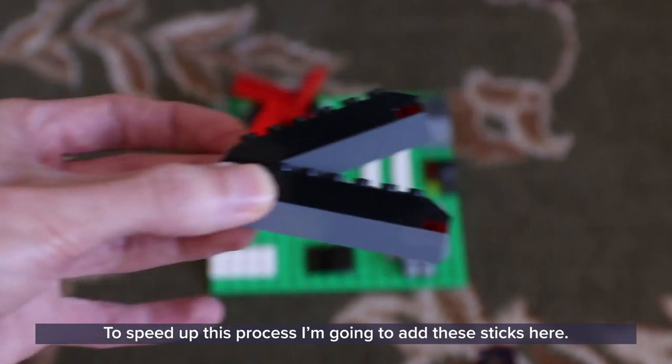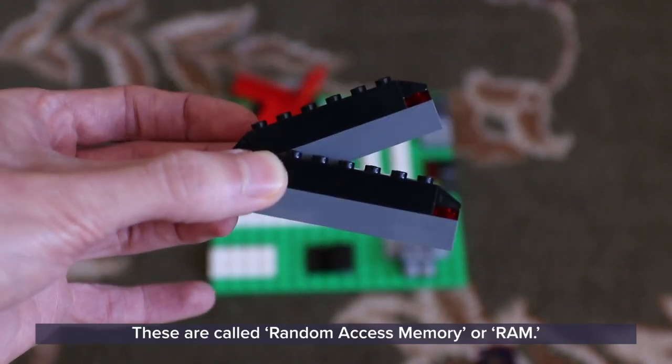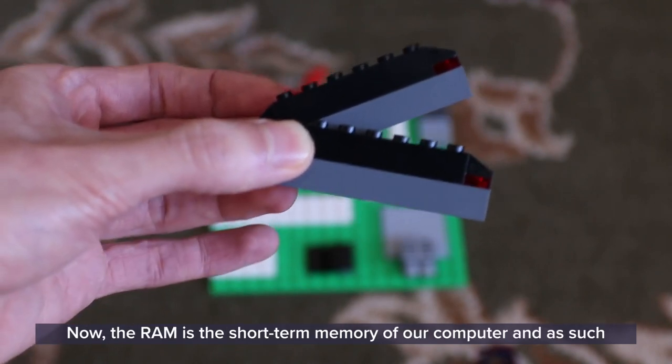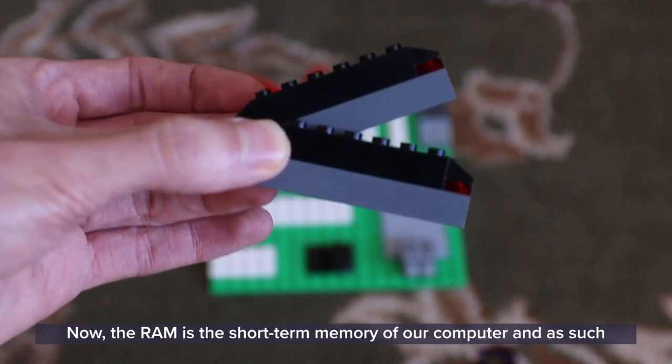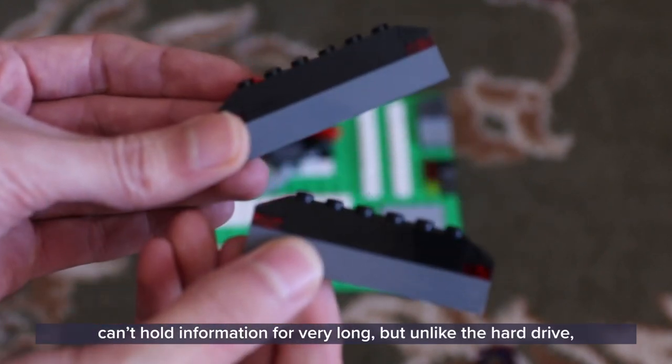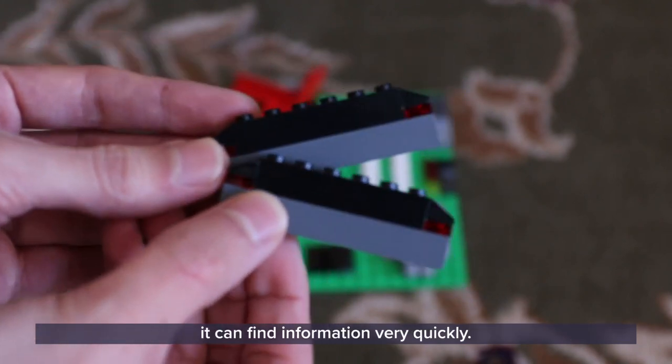To speed up this process, I'm going to add these sticks here. These are called random access memory or RAM. Now, the RAM is the short term memory of our computer and as such can't hold information for very long. But unlike the hard drive, it can find information very quickly.